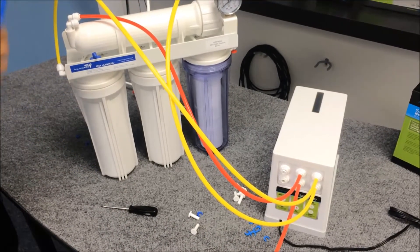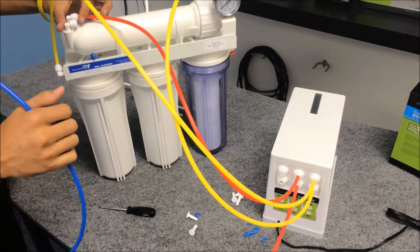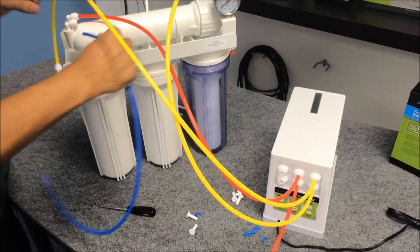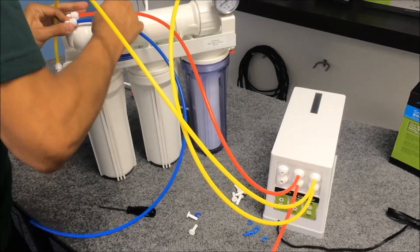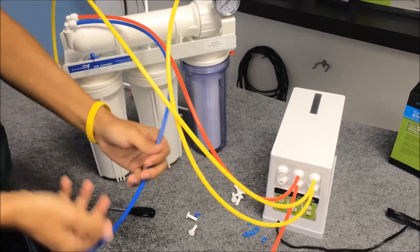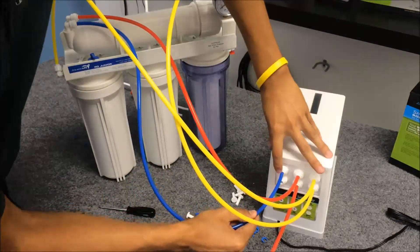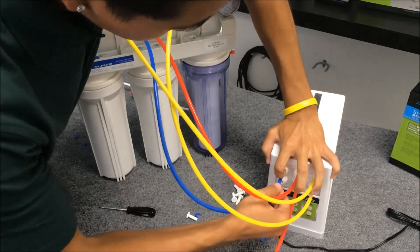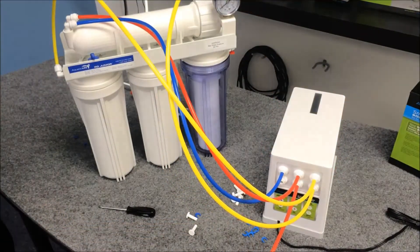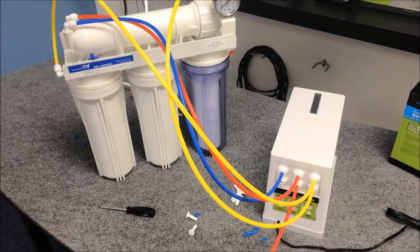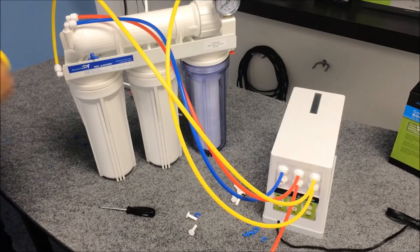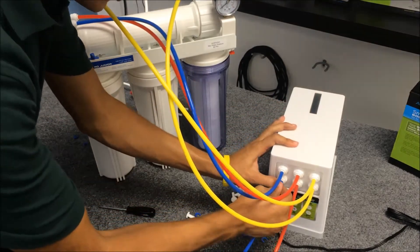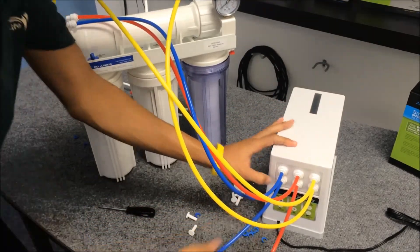Now for our filtered water, we're going to take, hook up the one on the right into the upper left-hand corner. All right, and now we'll take our filtered, which is going to be our bottom left, and that you're going to want going into your collection tank.